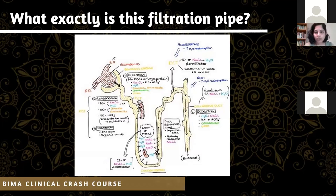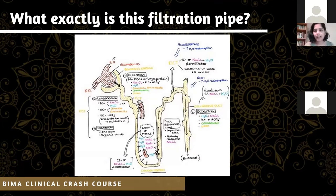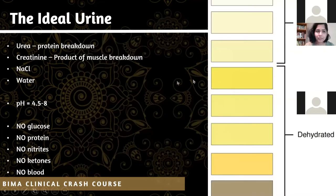We then travel down the collecting duct, where antidiuretic hormone, ADH, secreted from the posterior pituitary gland, reabsorbs more NaCl and water. At the end of it, we should only have ideal urine: urea, creatinine, a little sodium chloride with potassium and bicarbonate in tiny trace amounts, and water.